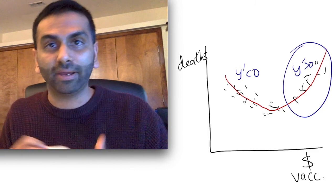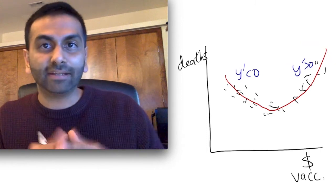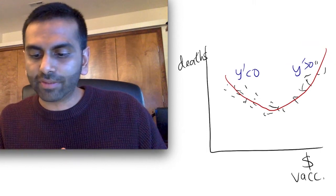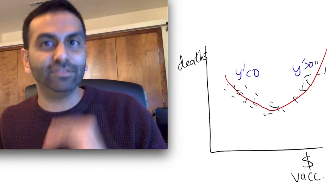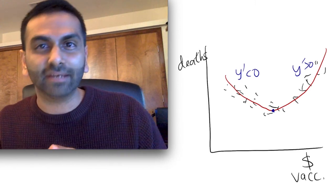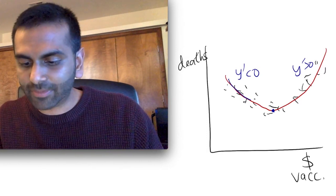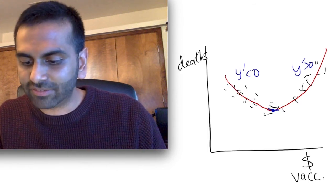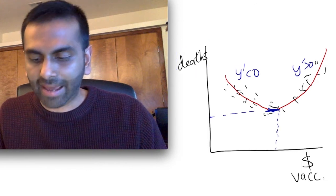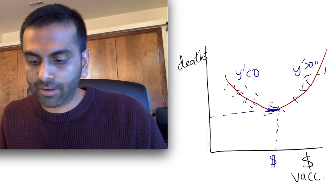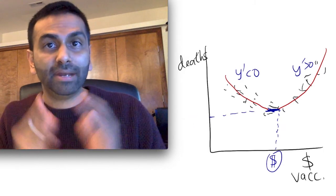Just because spending has a negative return at some point doesn't mean we shouldn't spend anything at all. We can use calculus to find where this function is minimized. Instead of guessing and checking at different points, you just find where the derivative is zero — which is a fancy way of saying where the curve is flat. Here it's downward sloping, here it's upward sloping, but it's only flat at one point, and that point is in fact the minimum deaths. Once you get an estimate for that based on your data, you have a number, and you can budget that amount for the vaccine — our best estimate for minimizing deaths.